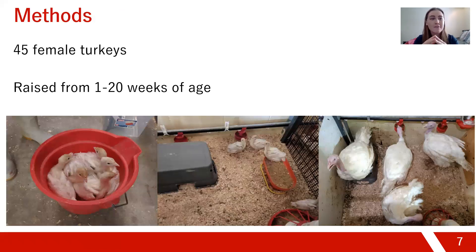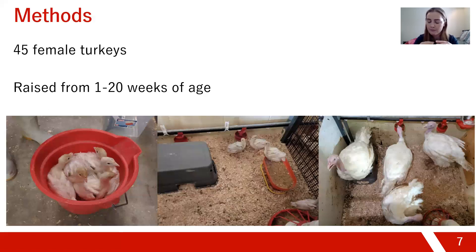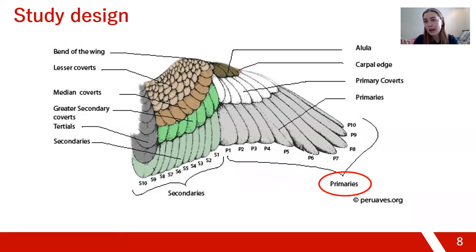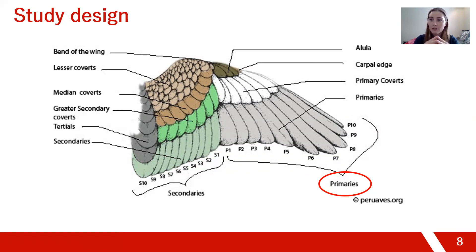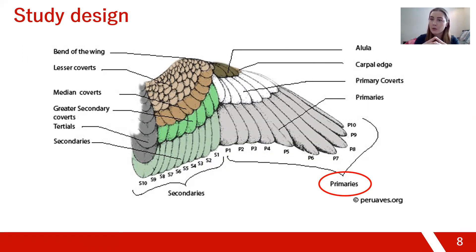We had 45 female turkeys raised from one to 20 weeks of age at the Arkell Research Station at the University of Guelph. The feathers we focused on are the primary feathers — the outermost flight feathers of the wing. These are used a lot in biomarker research because they are really easily identifiable and countable. Turkeys have 10 primary feathers, numbered 1 to 10 going from proximal to distal.